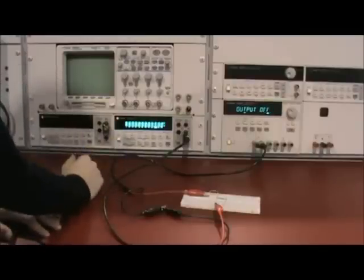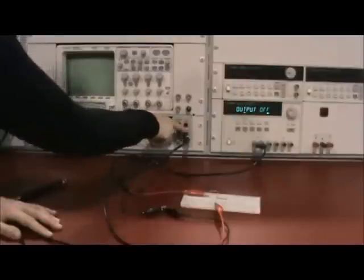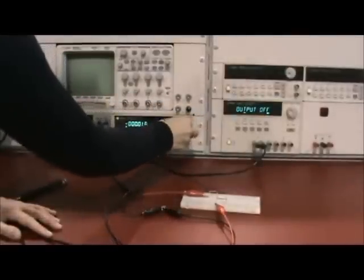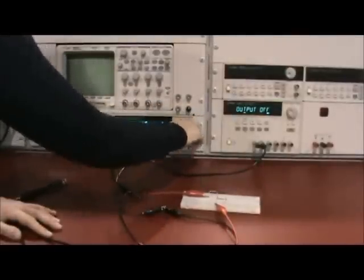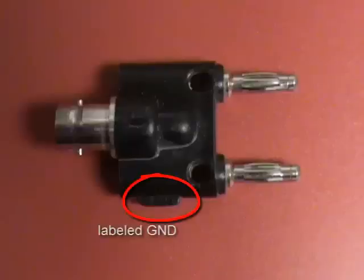Next, I set up the DMM to work in the DC current mode. Double check that you've set the ground terminal in the port labeled ground, the black port. Remember on the BNC to banana connector, the ground terminal is the one with the small tab labeled GND.